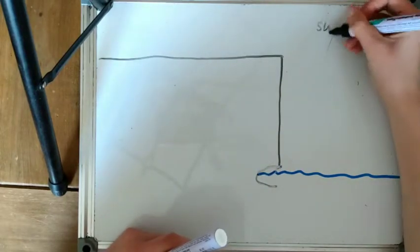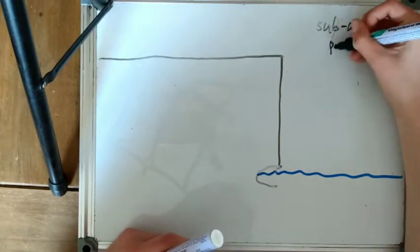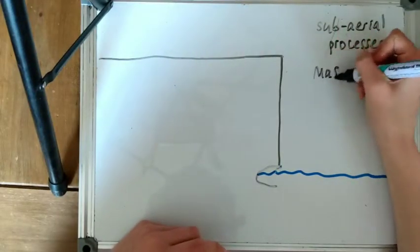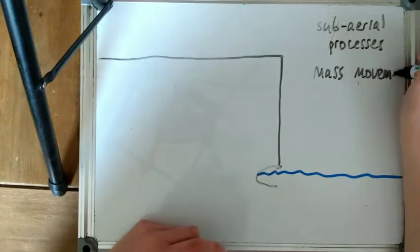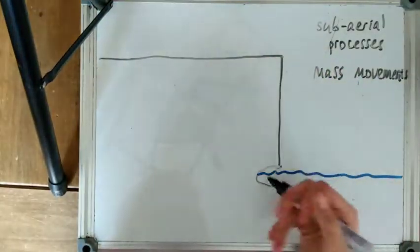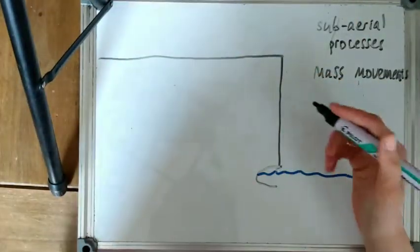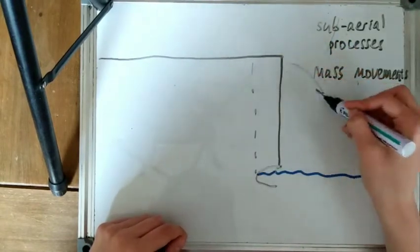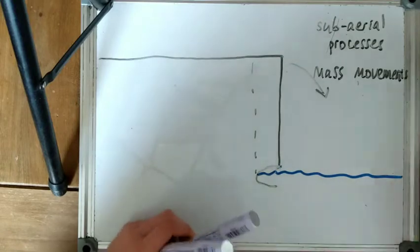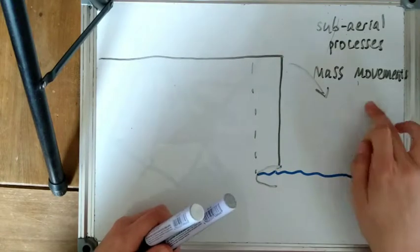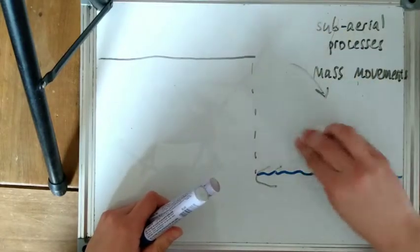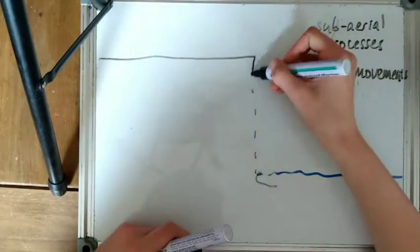So this overhang above the wave cut notch is going to be impacted by sub-aerial processes of weathering as well as mass movements such as rock fall because it's a 70 degree angle or more cliff face. Eventually this cliff overhang will fall into the water through a mass movement which will probably be a rock fall and this will result in the cliff to recede a little bit.